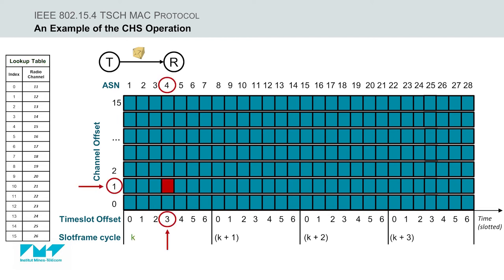Now, if we consider the scenario where node T is scheduled to transmit on channel offset 1 and time slot 3, which is on ASN 4, then by applying the pseudo-random channel hopping sequence for the first slot frame cycle K, we have the following.